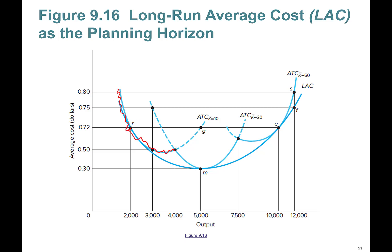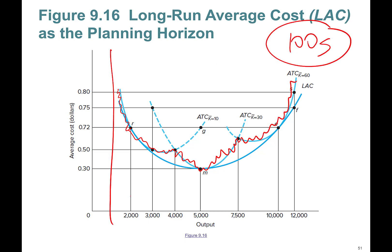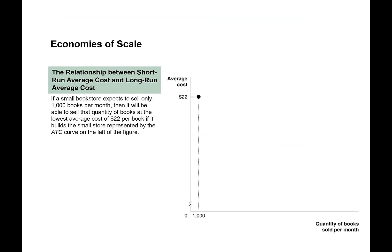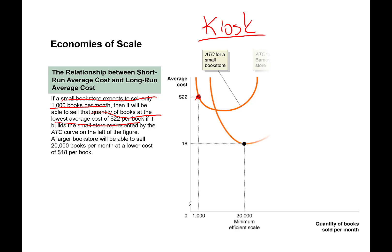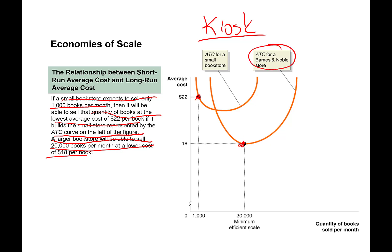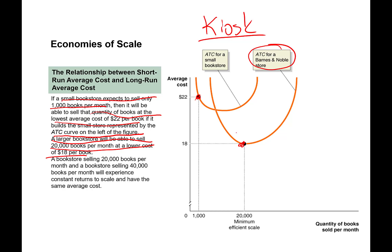If you draw hundreds of average total cost curves, their envelope forms the continuous long-run average cost curve. Here's a concrete example: a small bookstore expecting to sell 1,000 books a month can do so at the lowest average cost of $22 per book if it builds a small store — like a kiosk at the mall. A larger bookstore, like a Barnes & Noble, can sell 20,000 books per month at an average cost of only $18, benefiting from economies of scale.